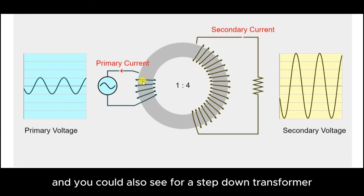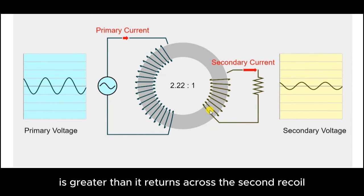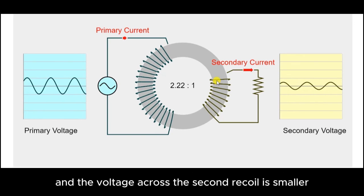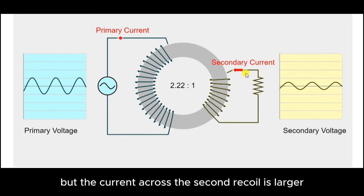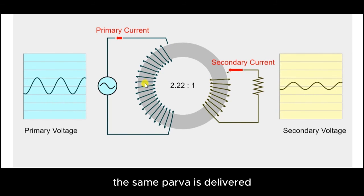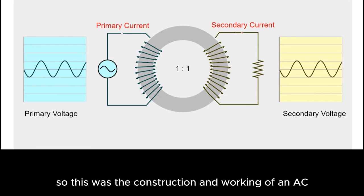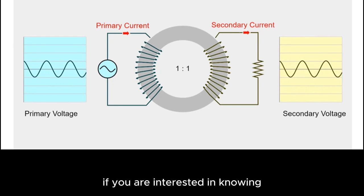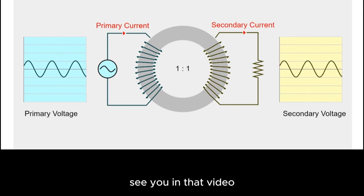You can also see that for a step-down transformer, when the number of turns across the primary is greater than the secondary, the voltage across the primary is larger and the voltage across the secondary is smaller, but the current across the secondary is larger. The product of voltage and current — the power — remains the same from primary to secondary. This was the construction and working of an AC transformer, which works on the principle of electromagnetic induction. If you're interested in more detail about electromagnetic induction, click on the video coming up on your screen.